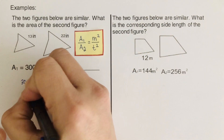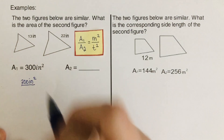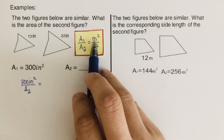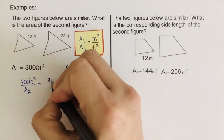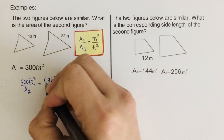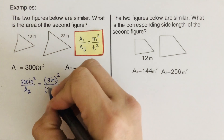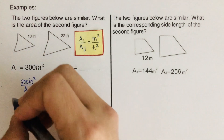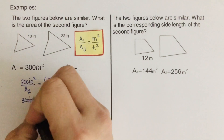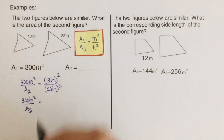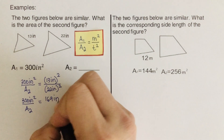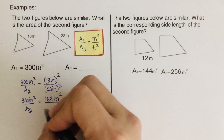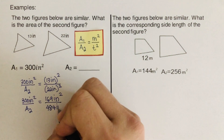So that gives us 300 inches squared over A₂, which is missing, equal to 13 inches squared over 22 inches squared. Once we square them: 300 inches squared over A₂, and 13 squared is 169 inches squared, while 22 squared is 484 inches squared.